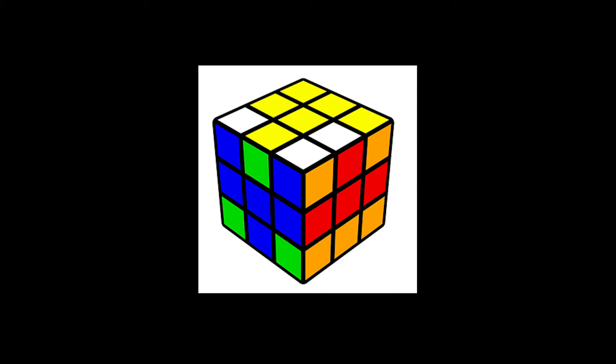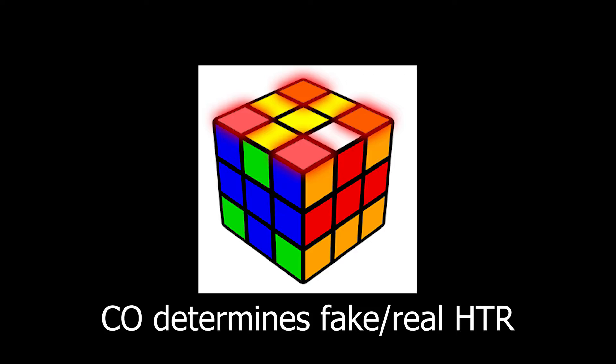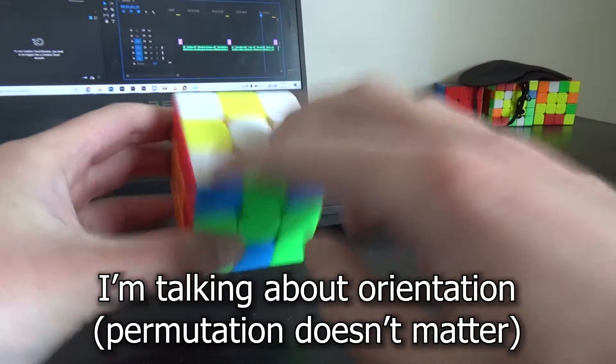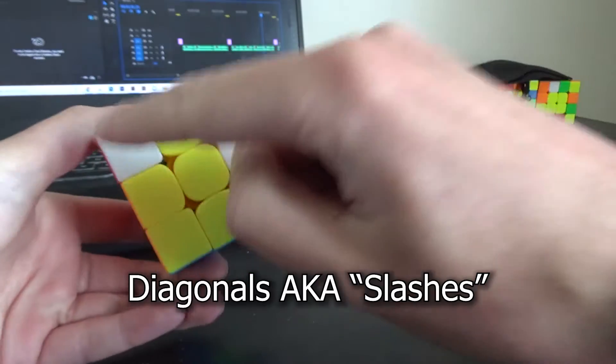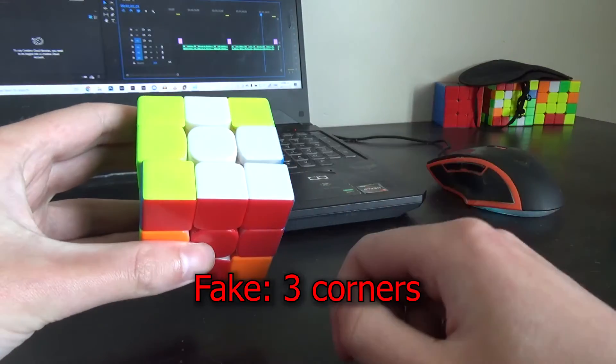So to see if you have real HTR, look at the top and bottom face corners of the second axis DR you just solved. And if those corners are either solved, have bars opposite each other, or two diagonals, it's real. Anything else is fake.